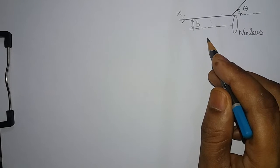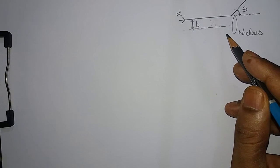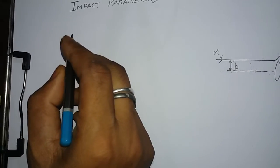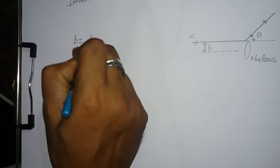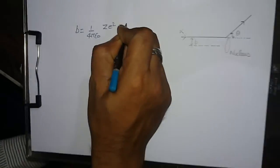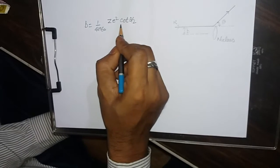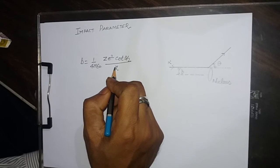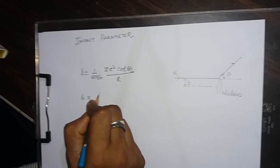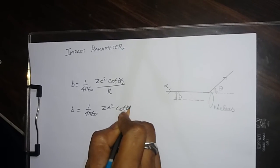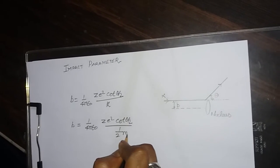The scattering depends on the impact parameter and nature of the potential field. Rutherford has deduced this expression: B equals 1 over 4πε₀ times ze squared times cot(θ/2) divided by K, where K is kinetic energy. That is, B equals 1 over 4πε₀ times ze squared times cot(θ/2) divided by half m_alpha v_alpha squared.